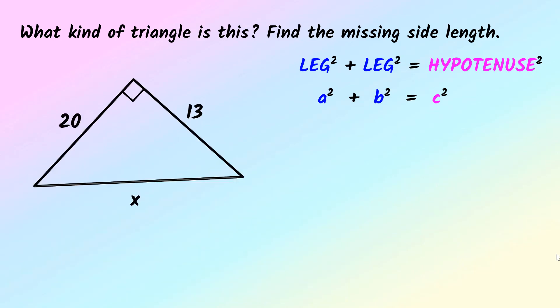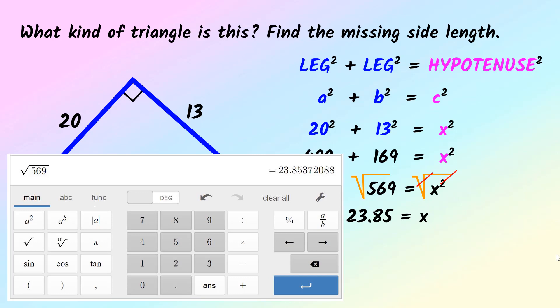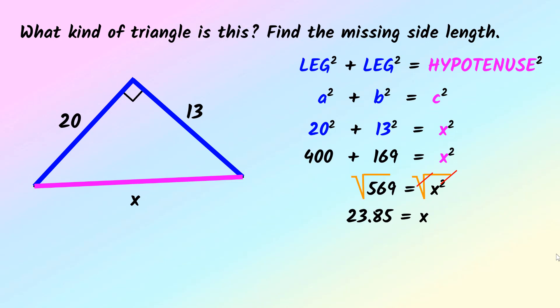Let's try one more on your own. My legs are 13 and 20, and X is the hypotenuse. So 20 squared plus 13 squared equals X squared. Evaluating the squares gives 400 plus 169 equals X squared. Combining like terms, 569 equals X squared. Now square root both sides — square rooting undoes the square — and you have just X on the right side. The square root of 569 rounded to two decimal places is 23.85. And that is how we use the Pythagorean theorem to find a missing side length of a right triangle.